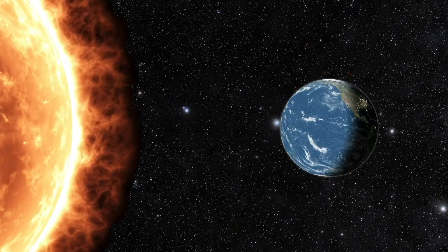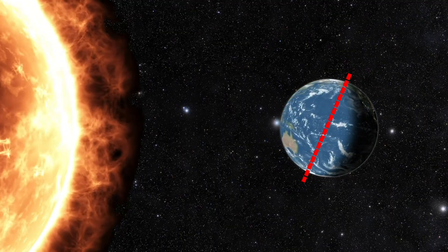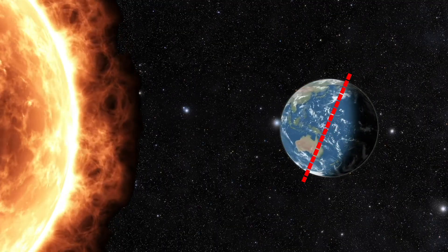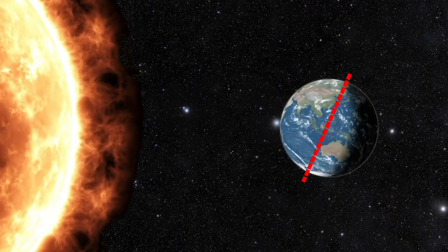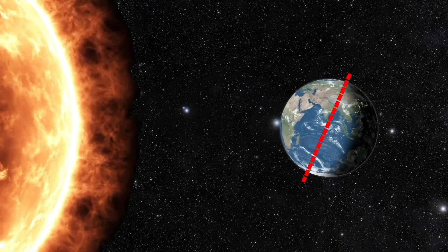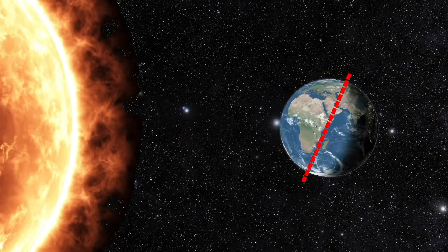An axis is an imaginary line that runs through the Earth's centre at an angle of 23.5 degrees. This spinning movement on its axis is called a rotation.